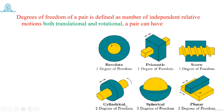Similarly, for a cylindrical pair — a cylinder rotating inside another cylinder — there is a sliding motion as well as a turning motion. Both are independent of each other. That is why it has two degrees of freedom: one translation and one rotation.